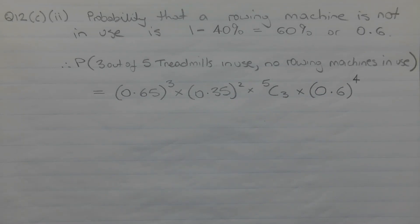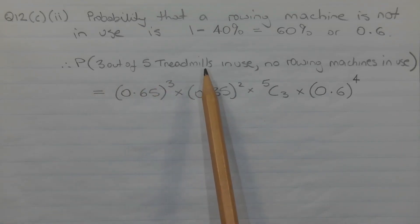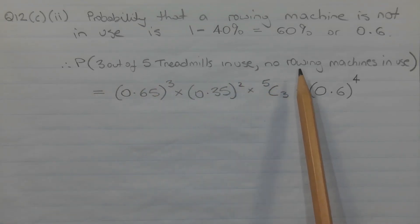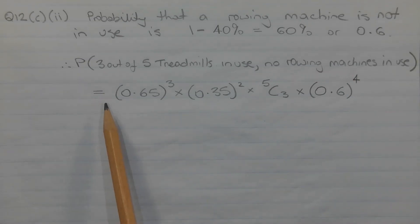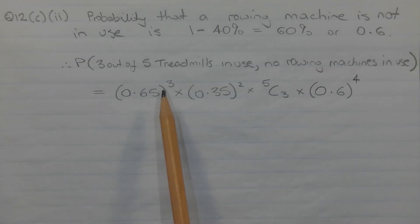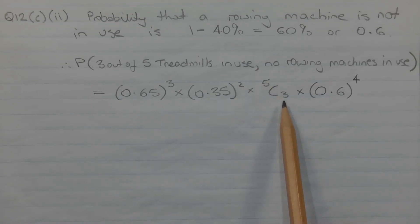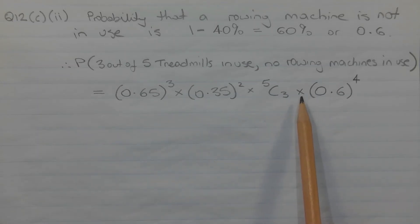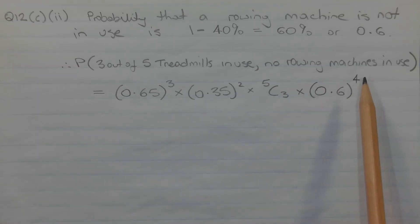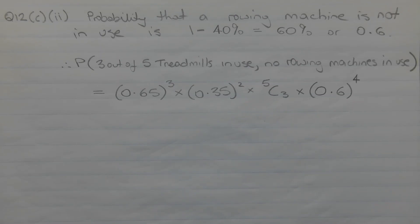Using the answer obtained in Part 1, the probability that three out of five treadmills are in use and no rowing machines are in use at any particular time is equal to 0.65 to the power of three times 0.35 to the power of two times five choose three. We then multiply that by 0.6 to the power of four, which comes from the four rowing machines not being in use at that particular time.